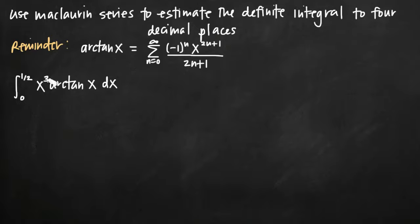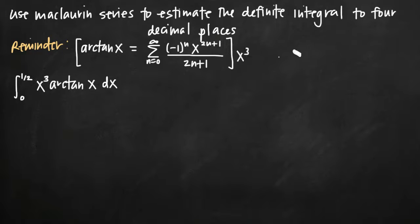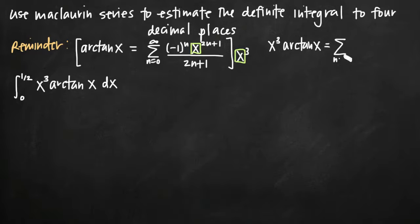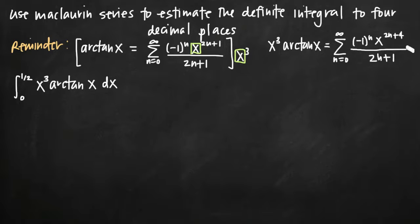All we need to do is multiply this series by x cubed in order to make it match our original function, x cubed arctan of x. So when we multiply both sides of this formula by x cubed, remember that when you have two terms multiplied together with like bases, we can add the exponents together. So 2n plus 1 plus 3 is 2n plus 4, and that's how we combine those two terms. We get the series with x to the 2n plus 4 divided by 2n plus 1. So this is our new series.